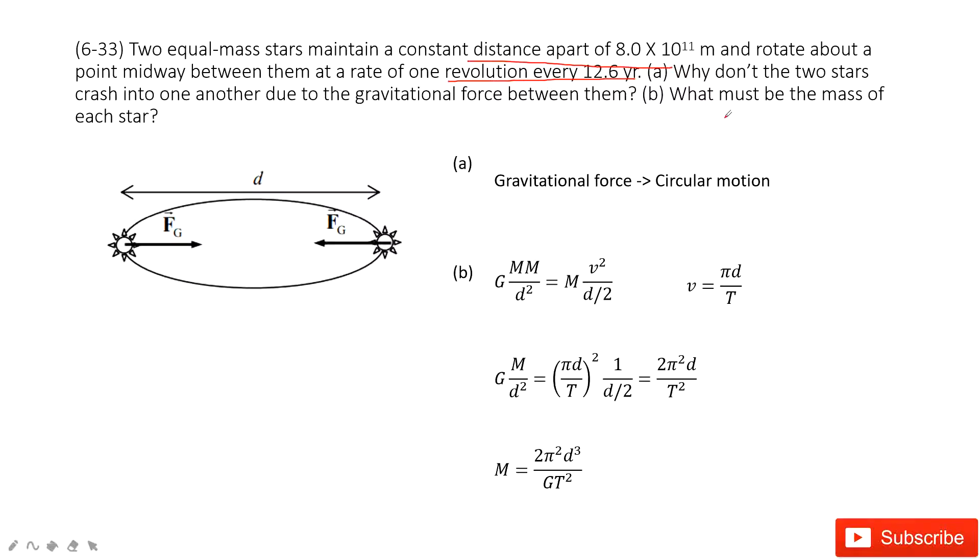The next one, what must be the mass of each star? So we need to find the mass for each one. You can see, you know the d, diameter, and you also know the period. They tell you the revolution is every 12.6 years.